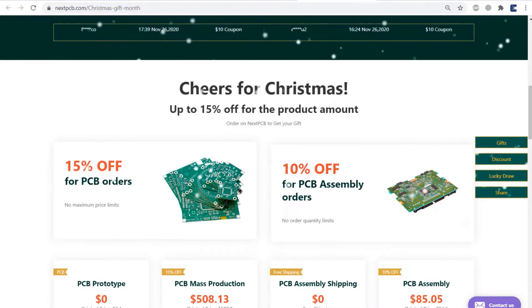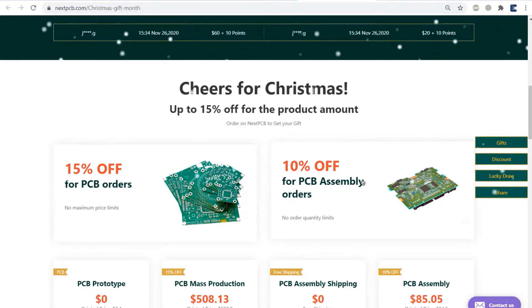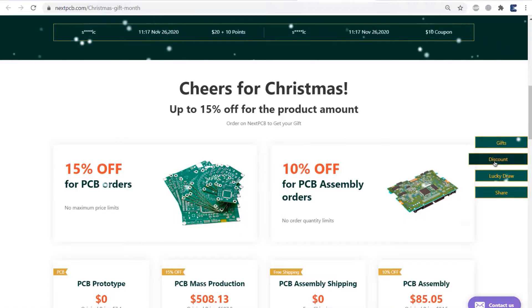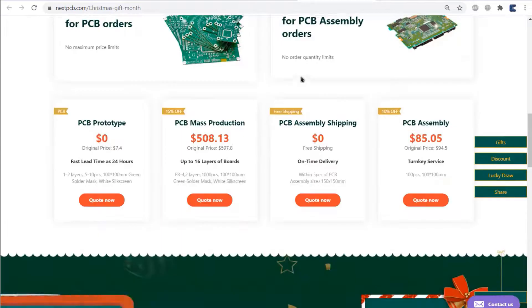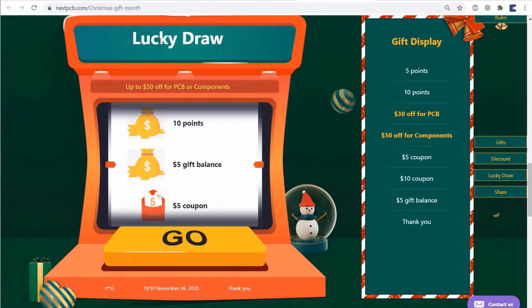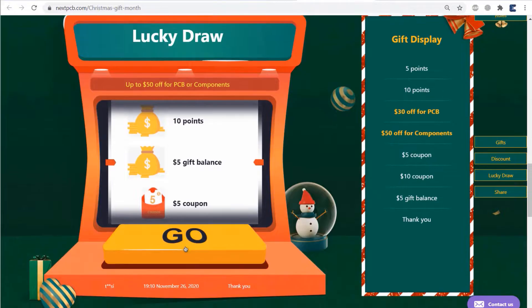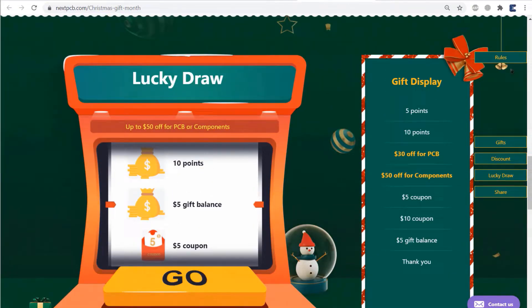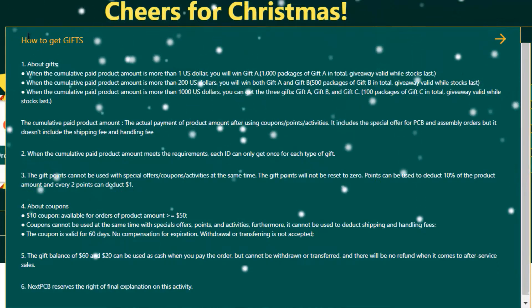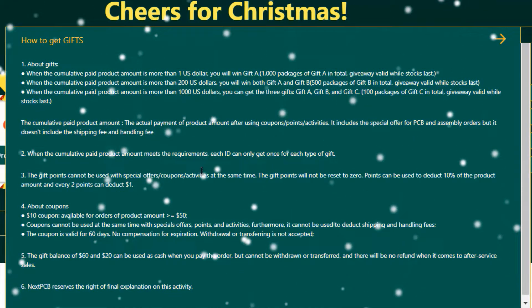For a PCB order, they give 15% off. For a PCB assembly order, 10% off. There is also a lucky draw for you. Everyone will get three chances to participate in the lucky draw. You can get up to $50 off for components and other gifts. You can check here how to get the three chances to participate in the lucky draw.